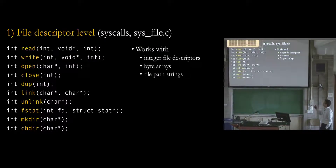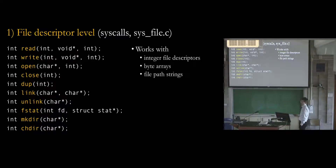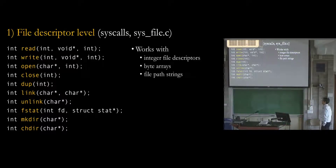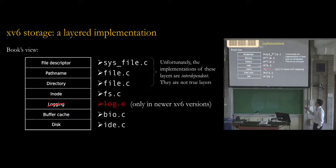To implement a given layer, you have to use the functions available below you and provide functionality to the layers above you so that higher-level layers can implement themselves correctly. I call the layers above a given layer the client layers. For the buffer layer, the file system layer is the client to the buffer layer, and the buffer layer is the client to the device driver.